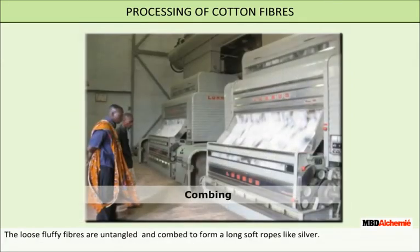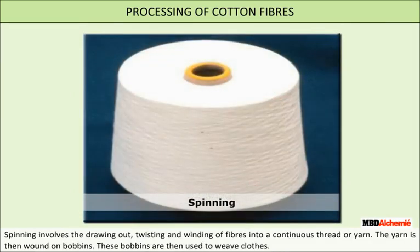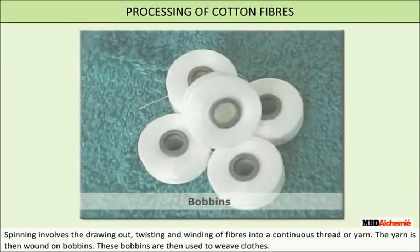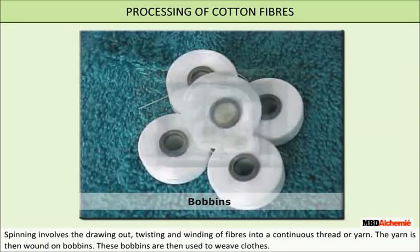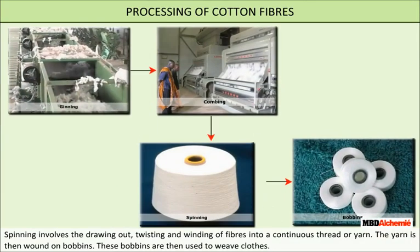The loose fibers are combed to form long rope-like strands called silver. Spinning involves the drawing out, twisting, and winding of fibers into a continuous thread or yarn. The yarn is then wound on bobbins, which are used to weave clothes.